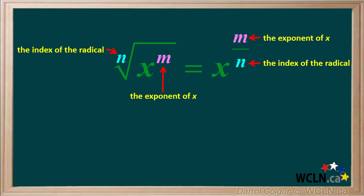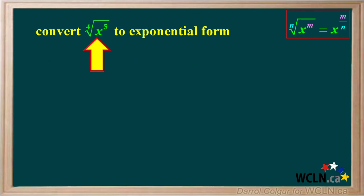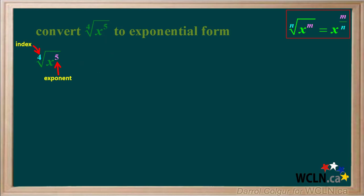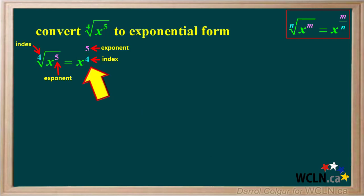Let's do a couple of examples. We're asked to convert the fourth root of x to the fifth to exponential form. We see that 4 is the index and 5 is the exponent of x. So in exponential form, 5 is the numerator of the exponent and the index 4 is the denominator of the exponent. Here's the full solution to this problem. If you like, pause the video and review the steps yourself.